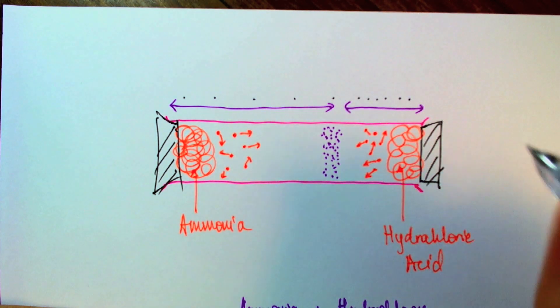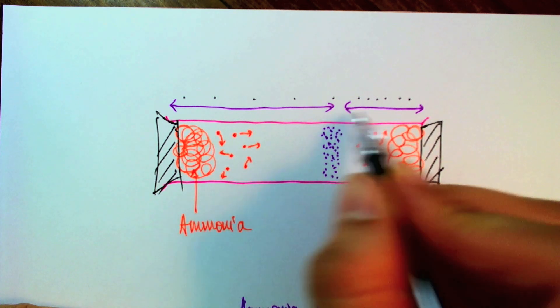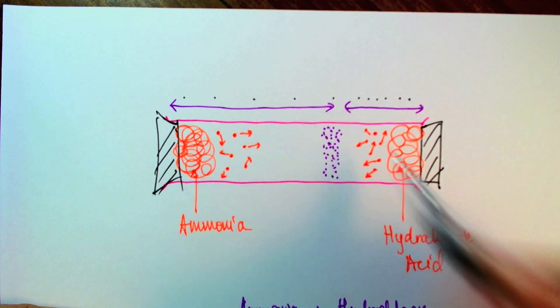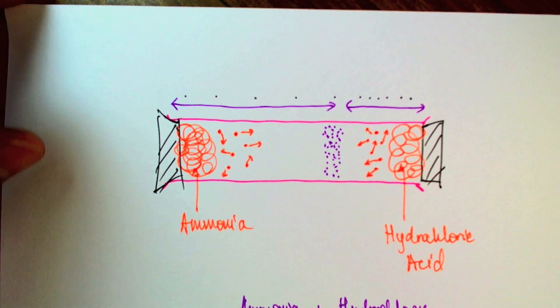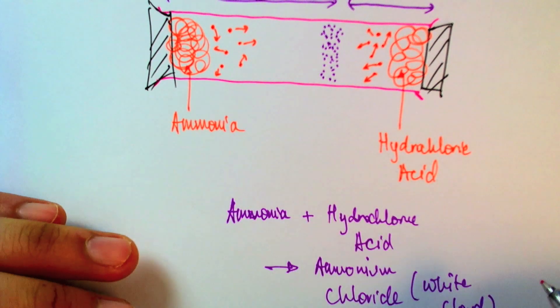Then, in the same amount of time, it covered less distance than the ammonia molecules did. That would be exactly what we would see if you were to perform this experiment. Now, the reason for this is that hydrochloric acid molecules are heavier than the ammonia molecules.